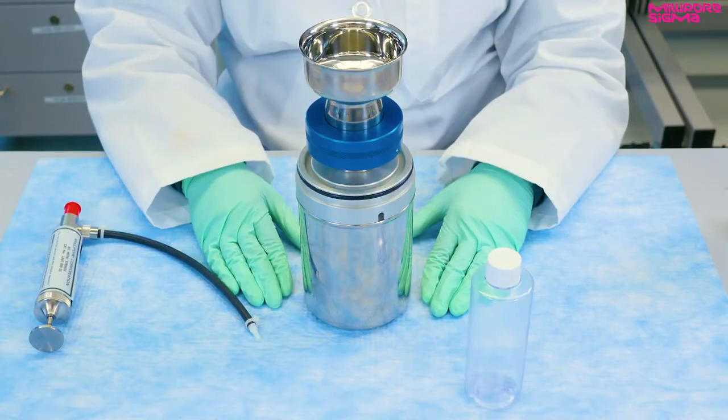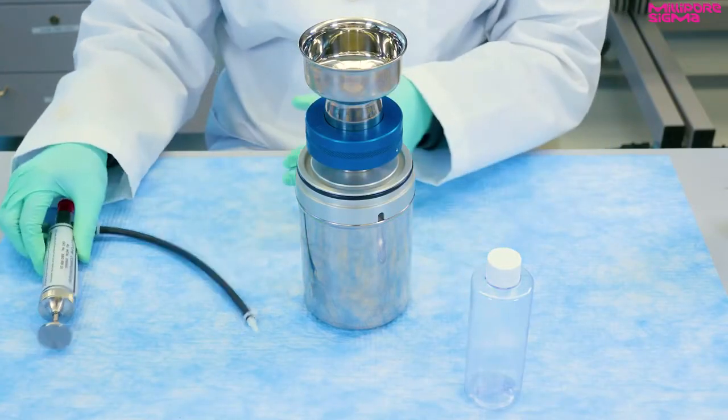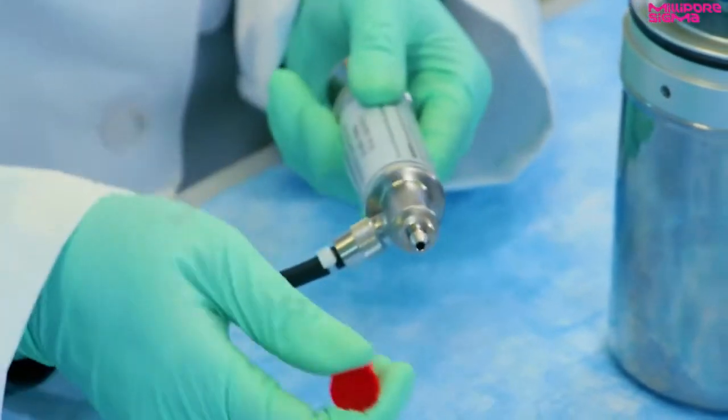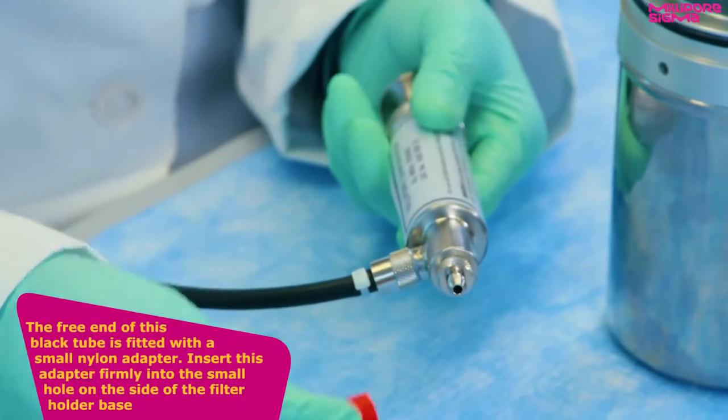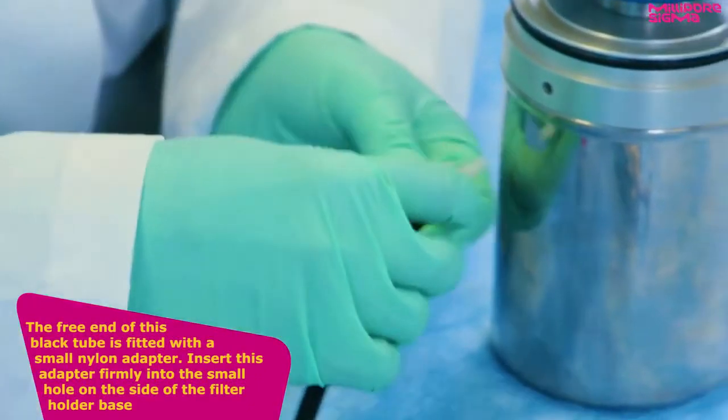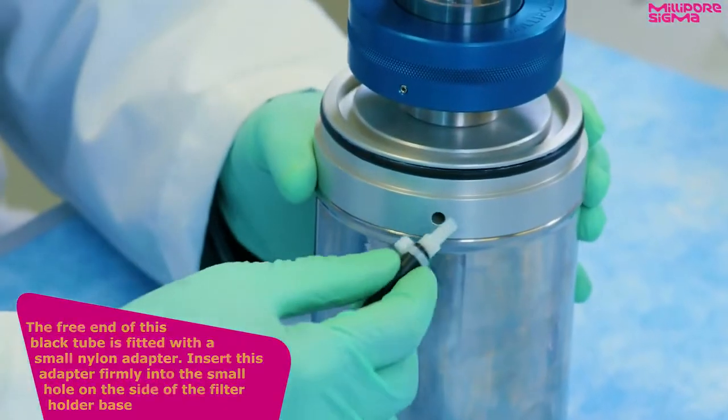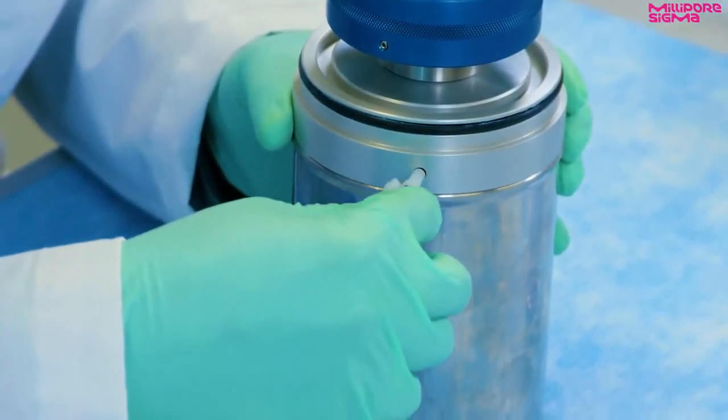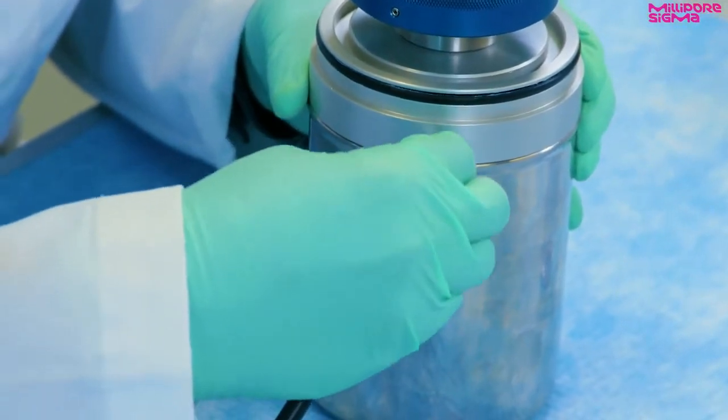Now let's prepare the filter holder for vacuum filtration by attaching the syringe vacuum pump. First, remove the red protective cap. The free end of this black tube is fitted with a small nylon adapter. Insert this adapter firmly into the small hole on the side of the filter holder base. The tube and adapter are normally left attached to the syringe for storage, but it can be removed for cleaning if needed.